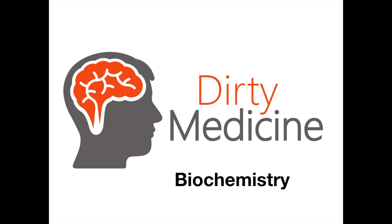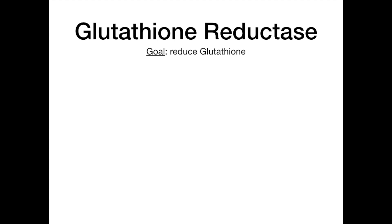Let's jump into part two and complete your understanding of everything from the HMP shunt, transitioning now to glutathione and free radicals. In this video, we're going to be talking about glutathione reductase. This pathway has one goal, and it's to reduce glutathione. Sometimes it's referred to as the glutathione pathway, other times the glutathione reductase pathway—technically glutathione reductase is an enzyme, but these all refer to the same thing.